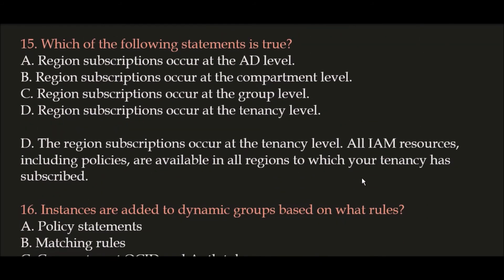Question 15: Which of the following statements is true? Option A: Region subscriptions occur at the AD level. Option B: Region subscriptions occur at the compartment level. Option C: Region subscriptions occur at the group level. Option D: Region subscriptions occur at the tenancy level. The correct and true statement is Option D. Region subscriptions occur at the tenancy level, and all IAM resources including policies are available in all regions to which your tenancy has subscribed.